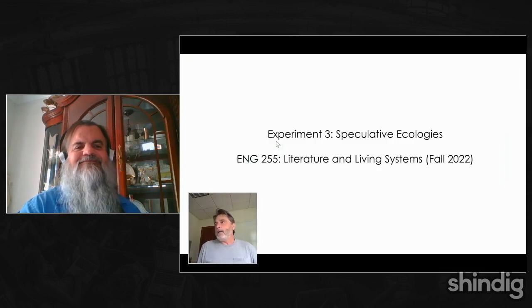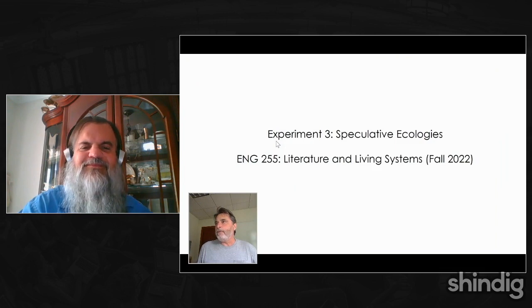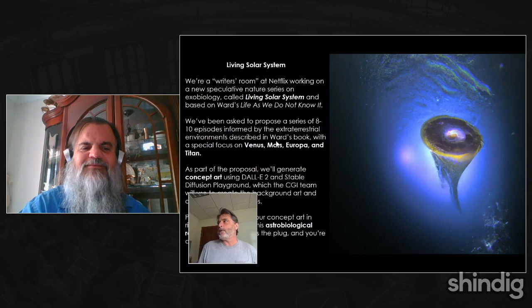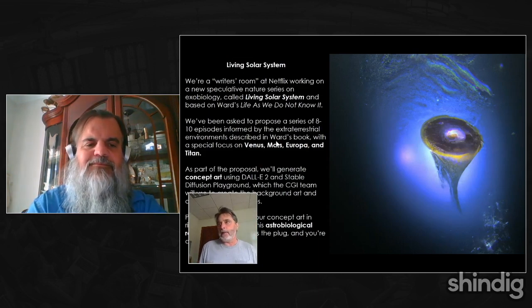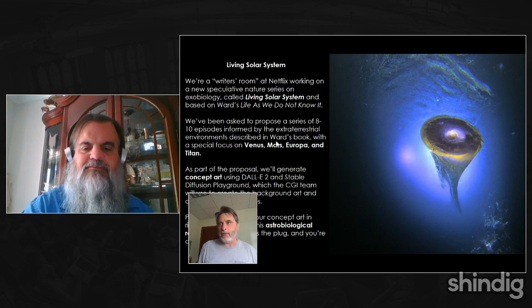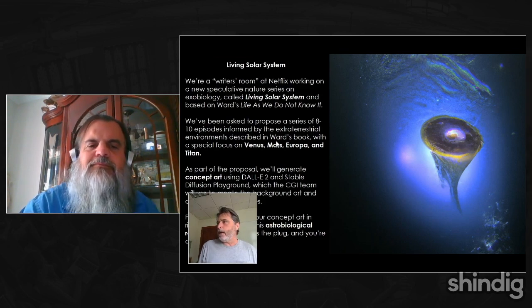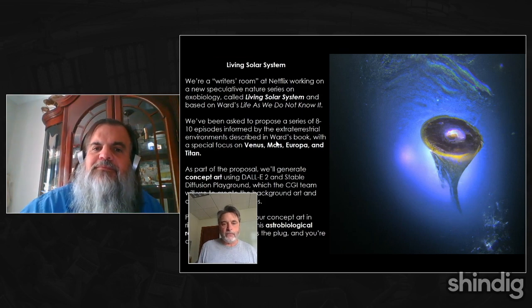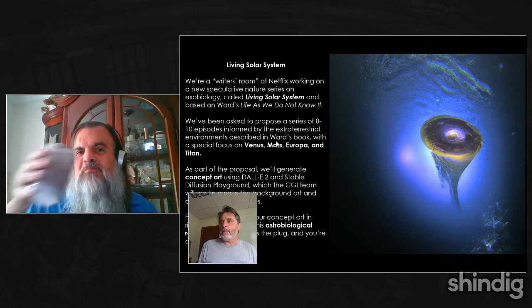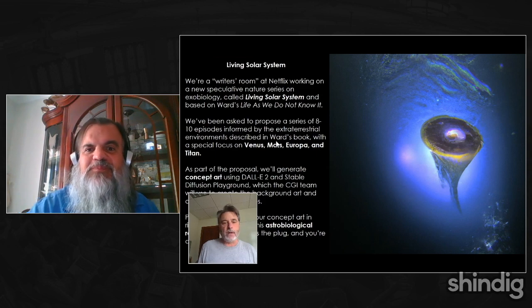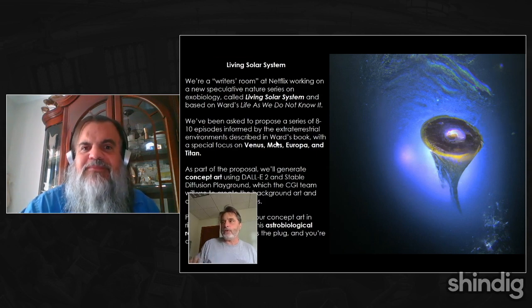This was for a literature and ecology class — the topic was speculative ecology. We were reading Peter Ward's Life As We Do Not Know It, where Ward is an astrobiologist who speculates on potential life in different places in the solar system. The role-play was that students were working for Netflix to develop a series, storyboarding concept art using DALL-E 2 that a CGI team could use to create background art and animations.